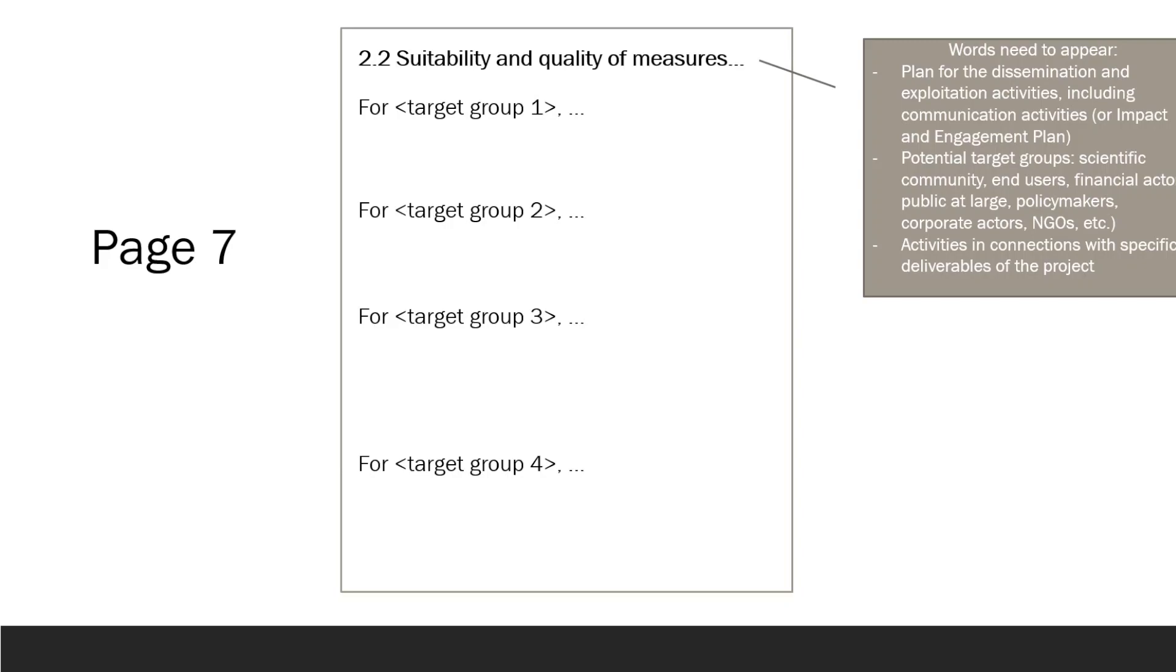These target groups can include the scientific community, end users, financial actors, the general public, policy makers, corporate actors, NGOs, and other stakeholders. For each group, outline the specific activities that will be undertaken, the outputs that will be tailored for that particular group, and the benefits that will be provided. Specify what information will be communicated to each group, how it will be communicated, and which communication channels will be utilized for this purpose. Make connections to specific project deliverables, which will be included in the Gantt Chart later.